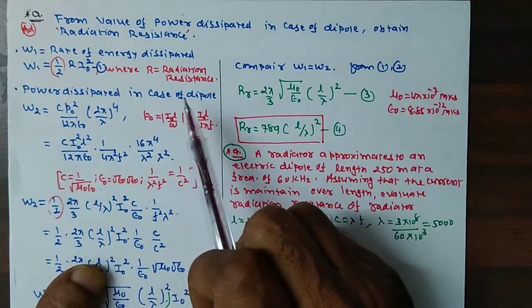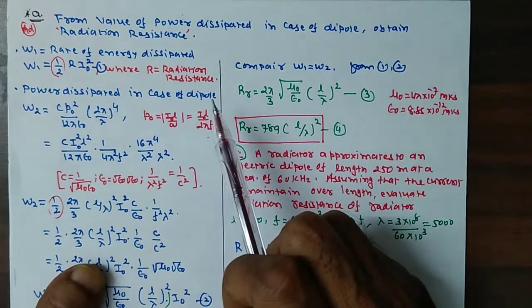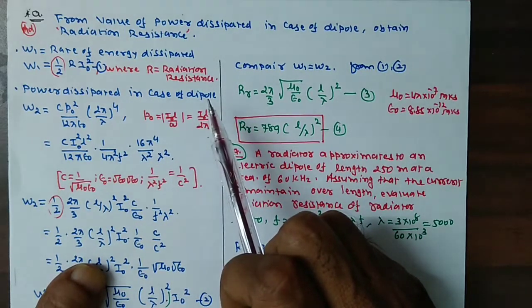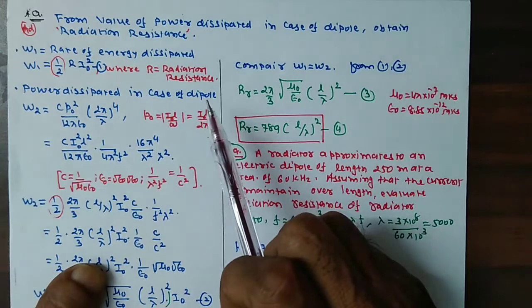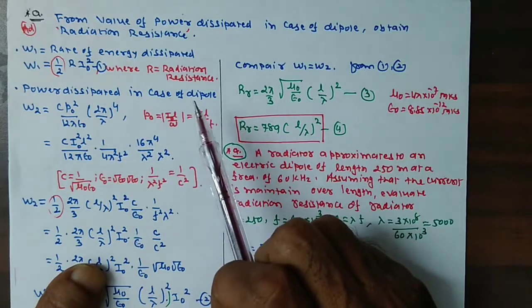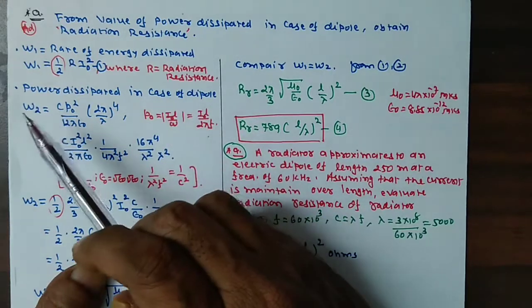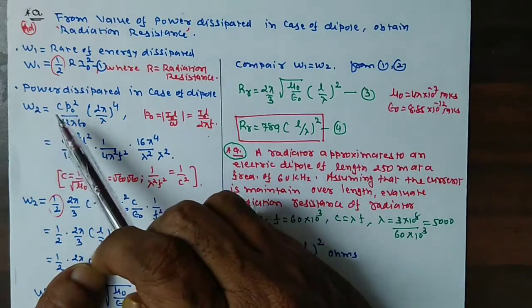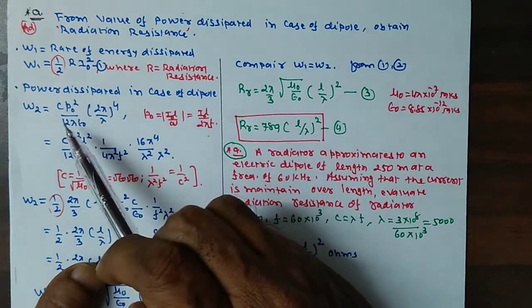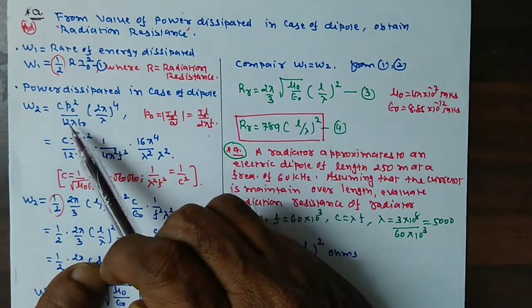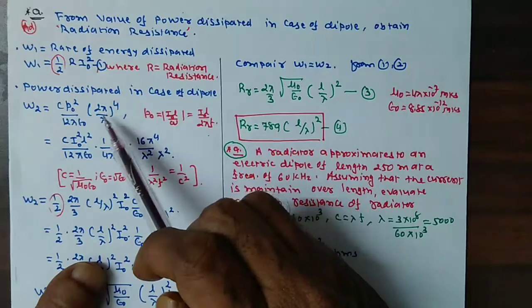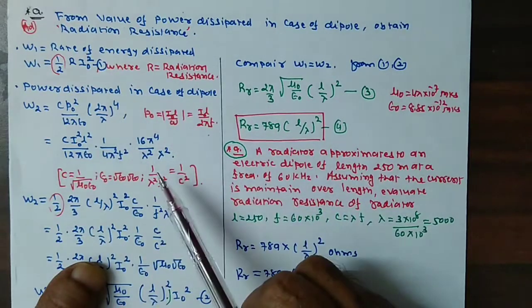Power dissipated in case of dipole in our stationary can be written by, in previous lecture, we have derived the value of this power W2 equal to C P0 square, 1 divided by 2π ε0 into K raise to 4, which means 2π by λ raise to 4.